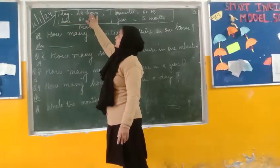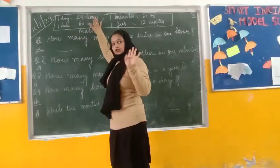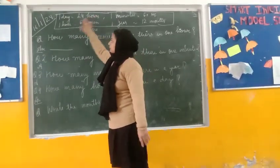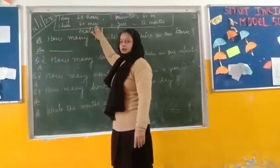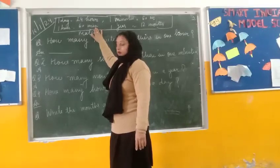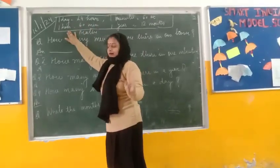One day is equal to 24 hours. One hour is equal to 60 minutes. 60 minutes makes one hour.